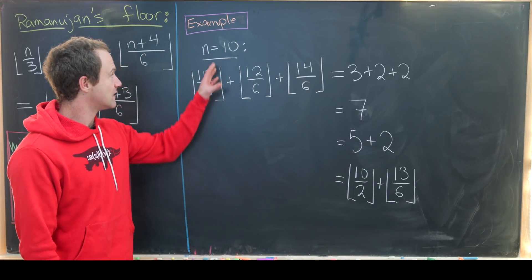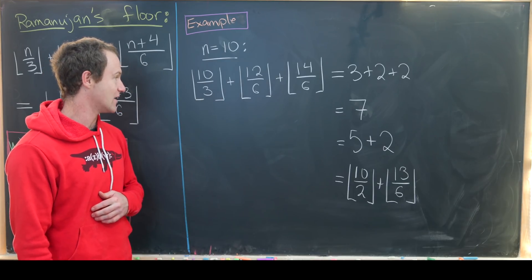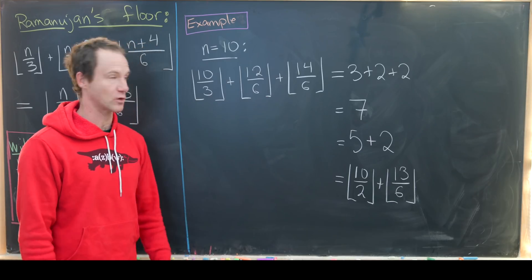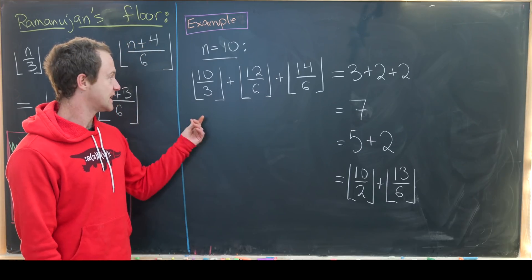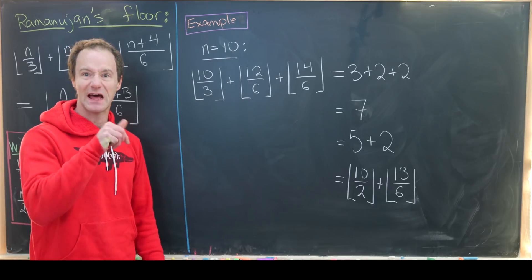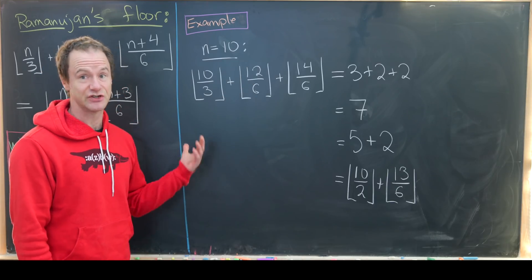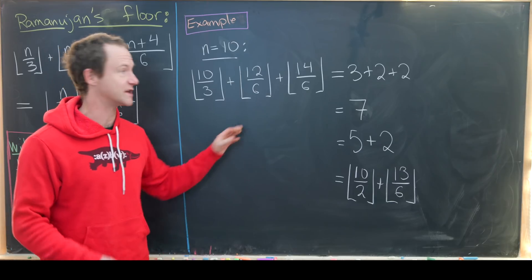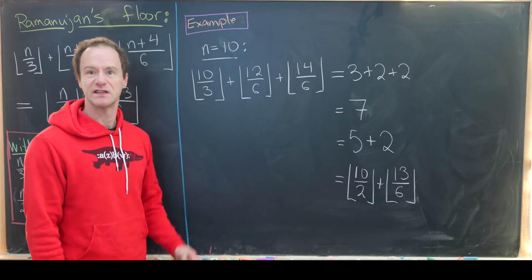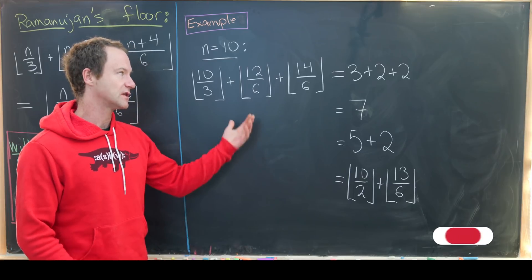I've worked out an example to see this in action. The example is when n equals 10. So we've got the floor of 10/3 plus the floor of 12/6 plus the floor of 14/6. Now 10/3 is between 3 and 4, so the floor gives us 3. 12/6 is an integer equal to 2, so the floor doesn't do anything — we get 2.